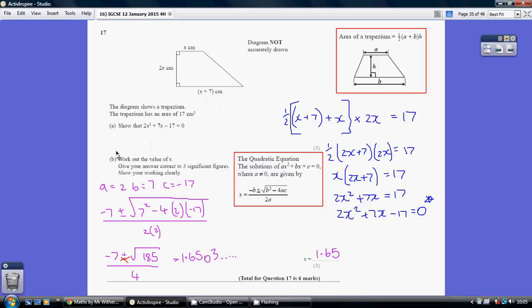Now, for part b, we can just completely start again. We've now just got to solve this. The clue to the method is in the wording of the question, correct to three significant figures. That suggests we're going into decimals, so we're not going to be able to factorise it. We're going to have to use the quadratic equation, which again is given.